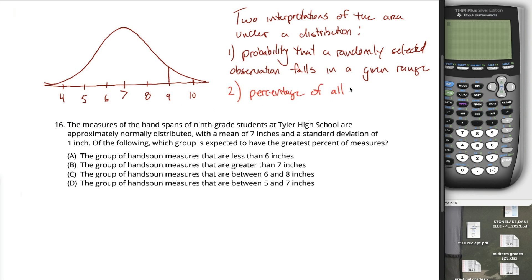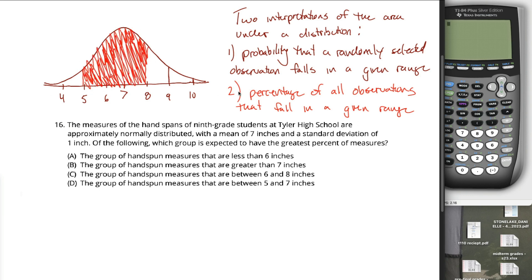The second interpretation is it's the percentage of all observations that fall in a given range. So something like: what percentage of all 9th grade students at Tyler High School have hand spans between 5 and 8 inches? All you'd have to do is figure out that area, assuming the total area underneath the curve is 1 or 100%. What we're trying to figure out is which group is expected to have the greatest percentage of measures — for example, is the percentage of students with a hand measure less than 6 inches bigger than the percentage with a hand span greater than 7 inches?